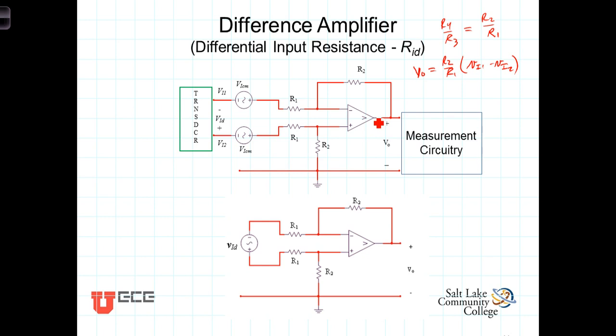We're now interested in the input resistance seen by the transducer. So we have a transducer that's going to be generating a relatively small voltage and feeding this amplifier.